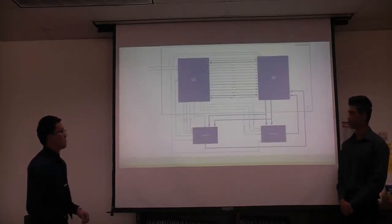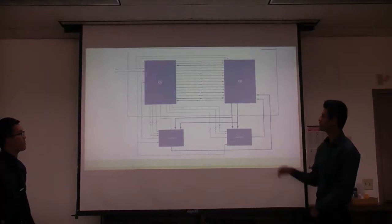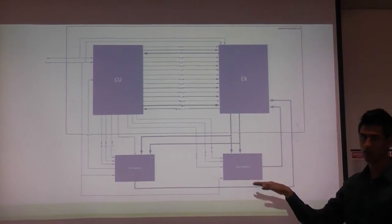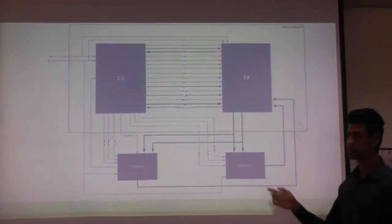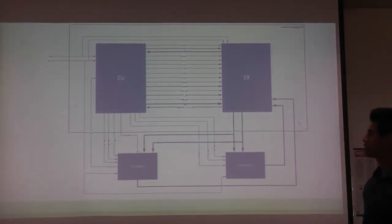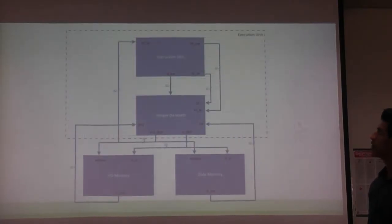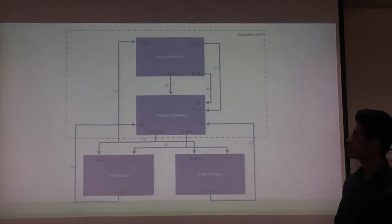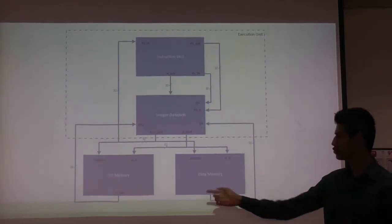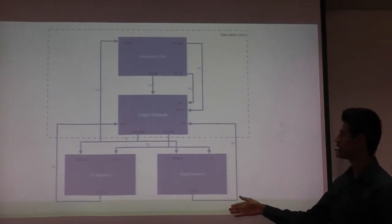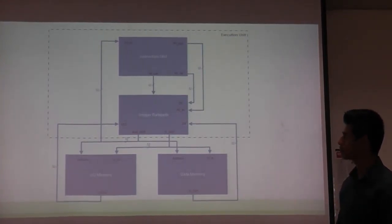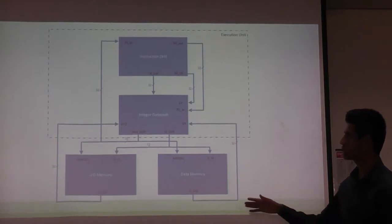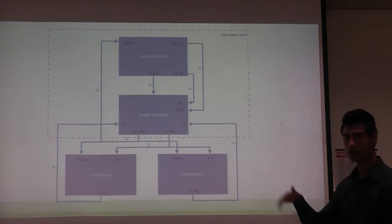Moving on to the actual architecture, the processor is made of a control unit, an execution unit, and two memory modules: an input/output memory and a data memory. Zooming into the execution unit, it's made of an instruction unit and an interior data path. We excluded all control signals in this diagram to make it clear how data flows through the processor.